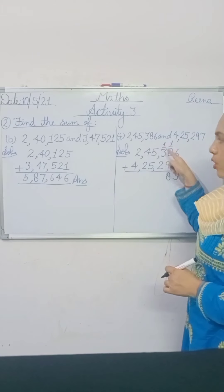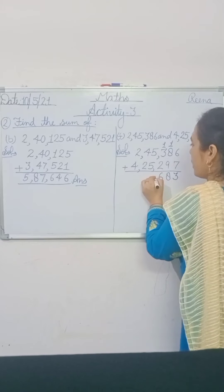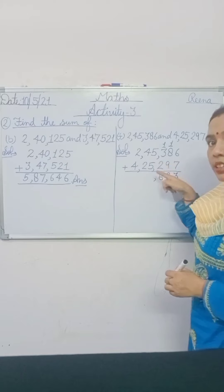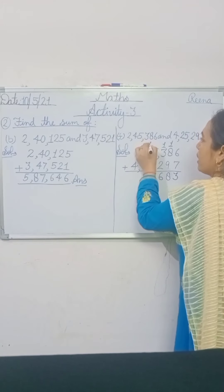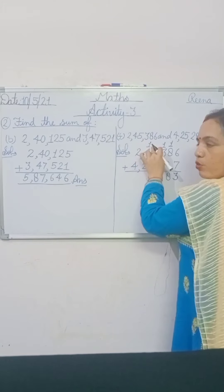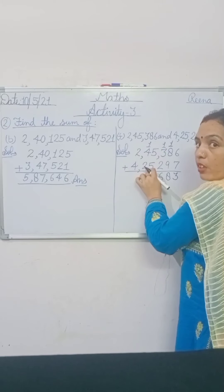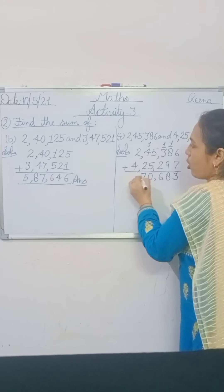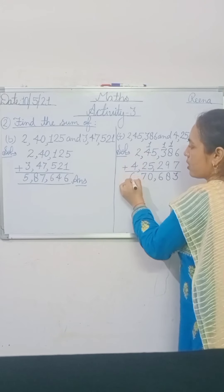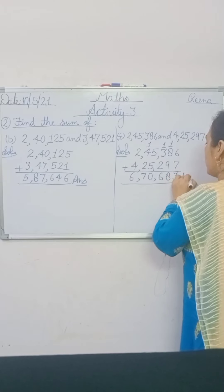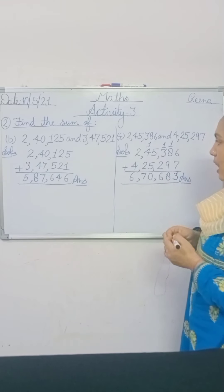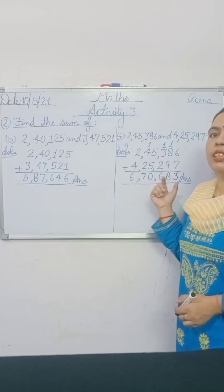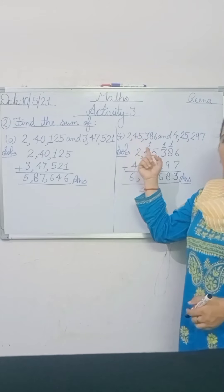3 plus 1 is 4, plus 2 is 6 — write 6 here, then use comma. 5 plus 5 is 10 — write 0 and carry 1. 4 plus 1 is 5, plus 2 is 7. Then use comma and 4 plus 2 is 6. That means 6,70,683 is the answer of part F.